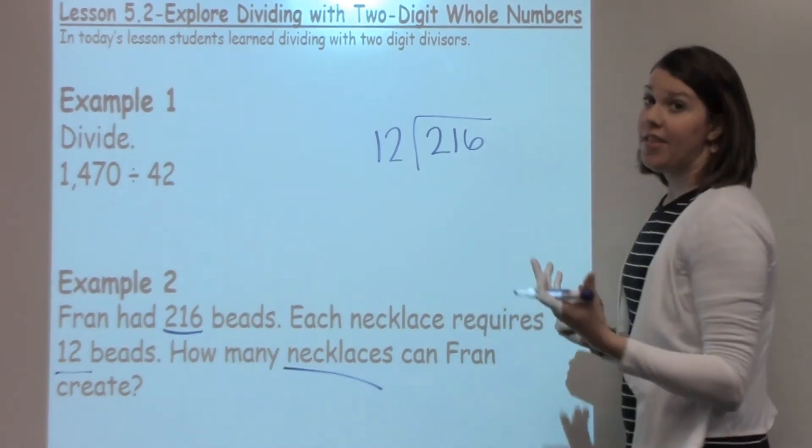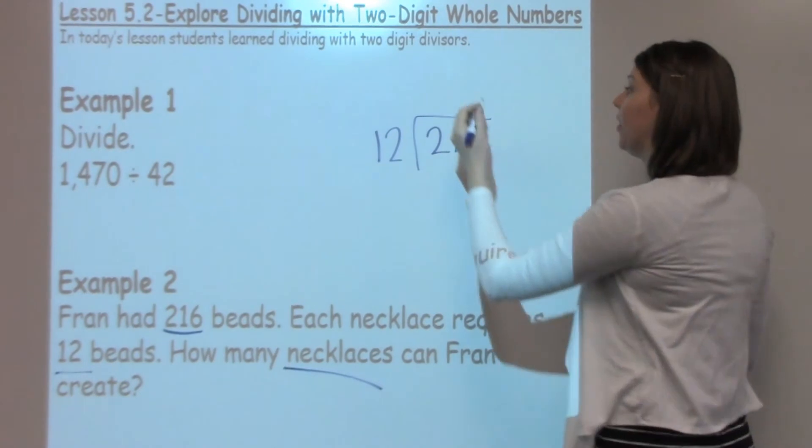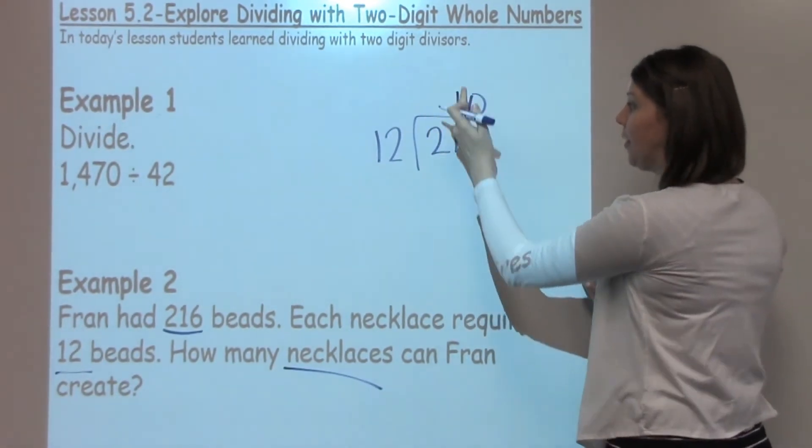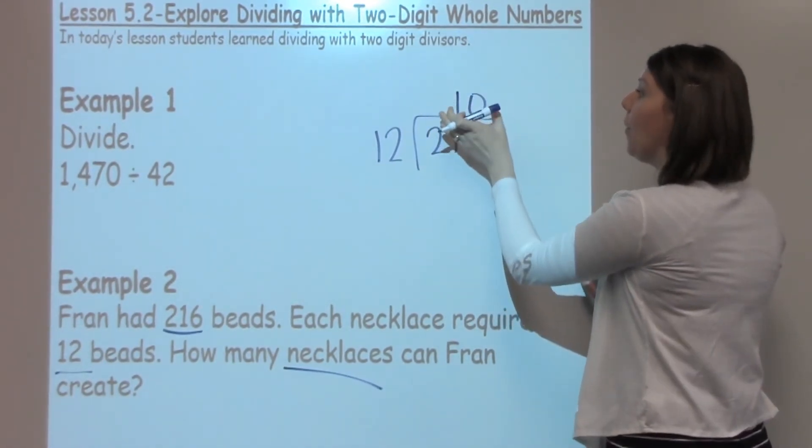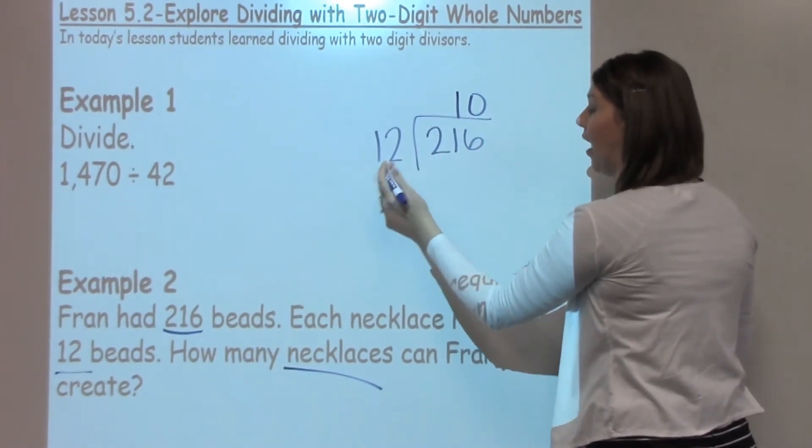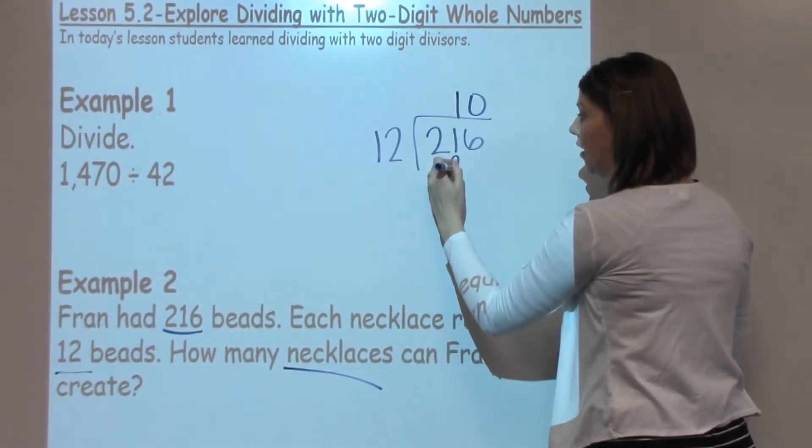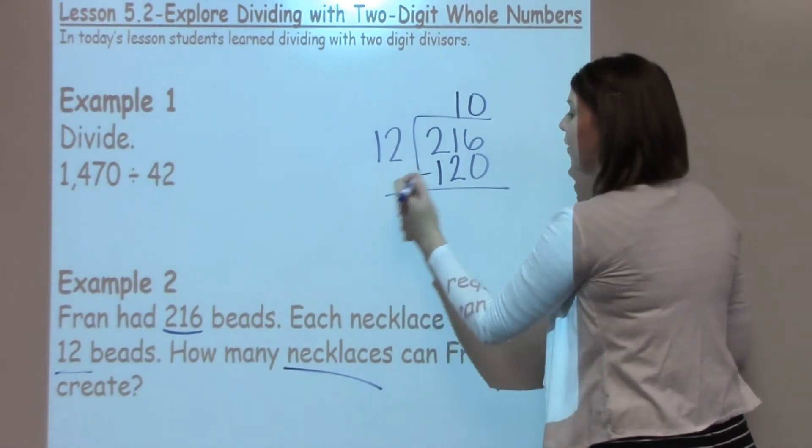So I'm going to start off with 10 up here. Notice I put each digit in the appropriate spot. When I take 10 times 12, I get 120. I am then going to subtract.